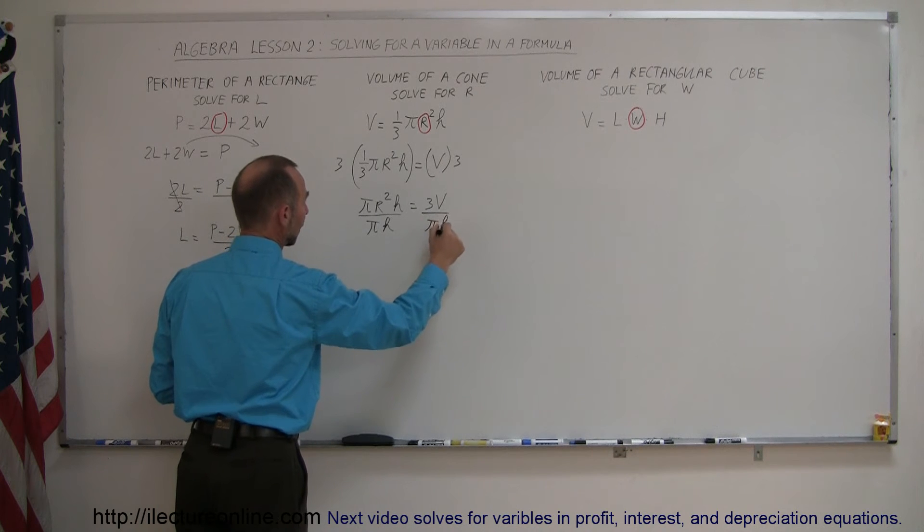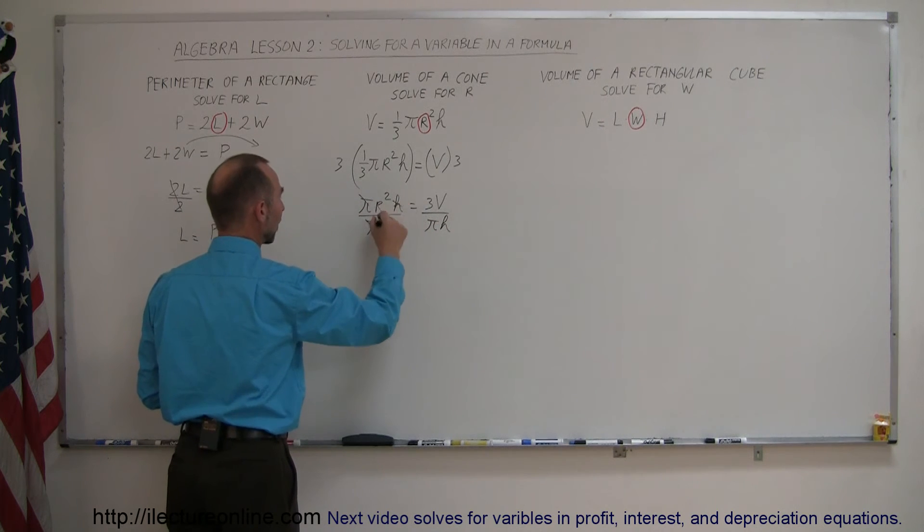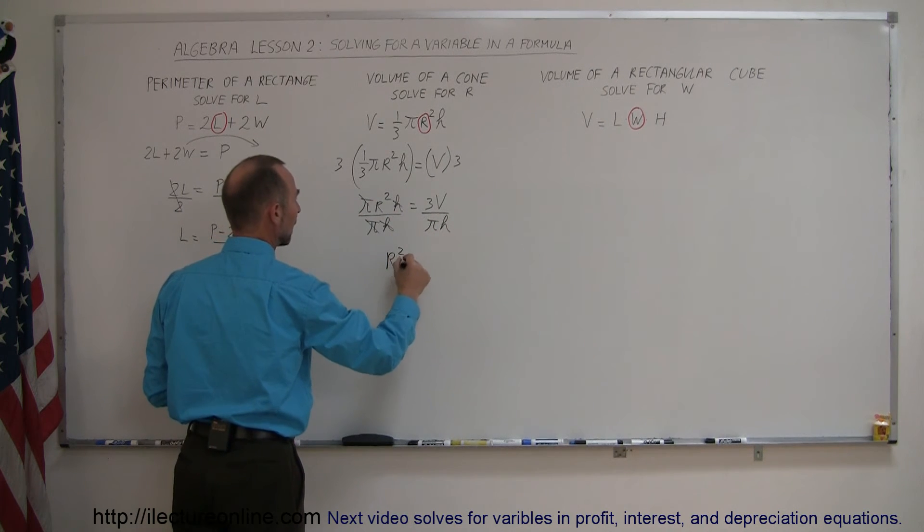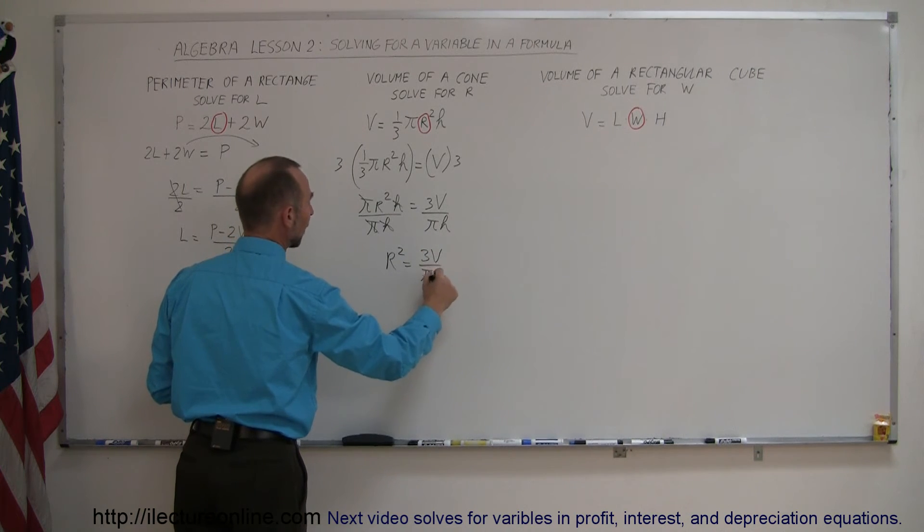Divide this by pi h. So the pi's cancel out, the h's cancel out, we're left with r squared equals 3V over pi times h.